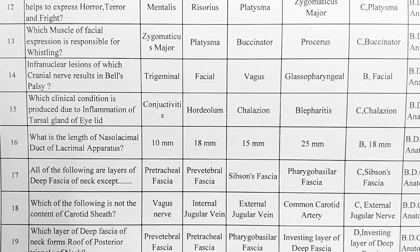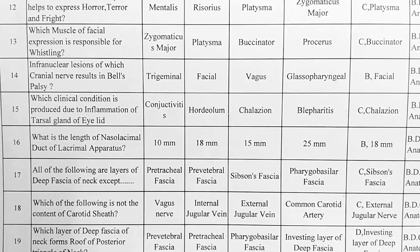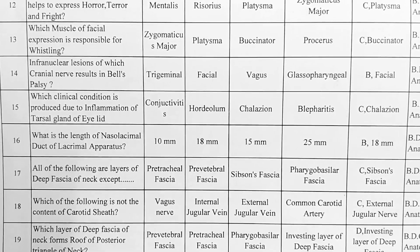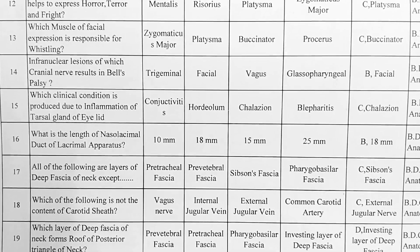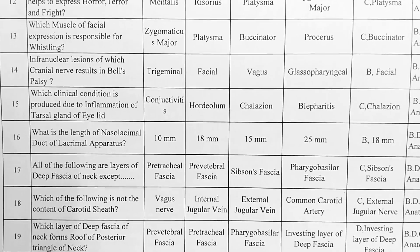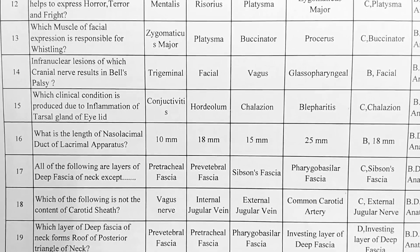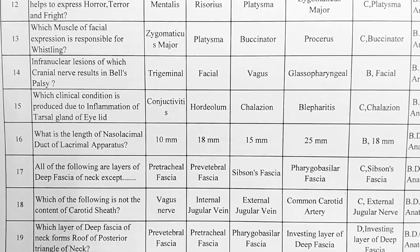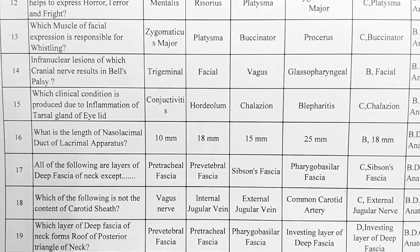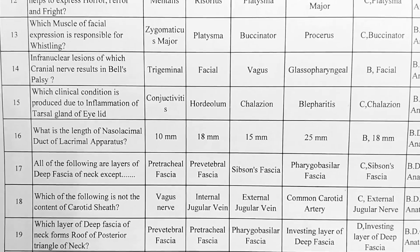Next. What is the length of the nasolacrimal duct of the lacrimal apparatus? Options — A: 10 mm, B: 18 mm, C: 15 mm, D: 25 mm. Option B is correct, 18 mm.